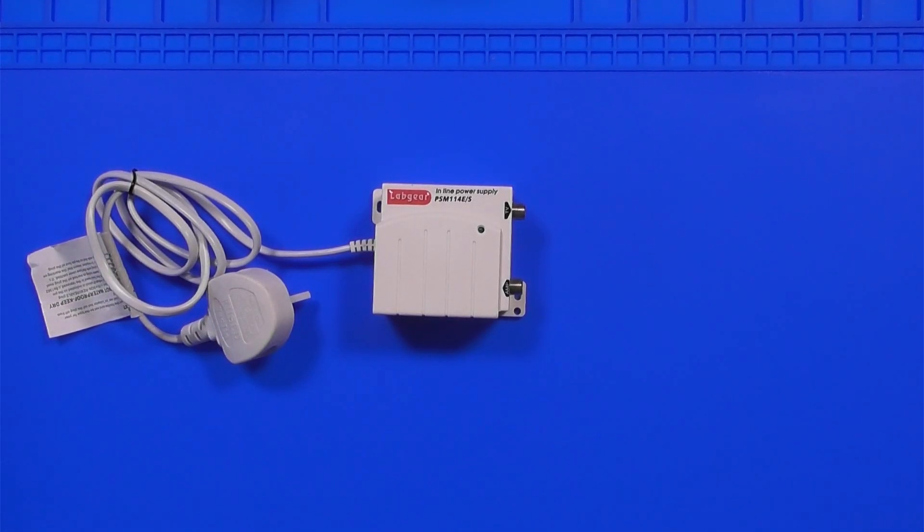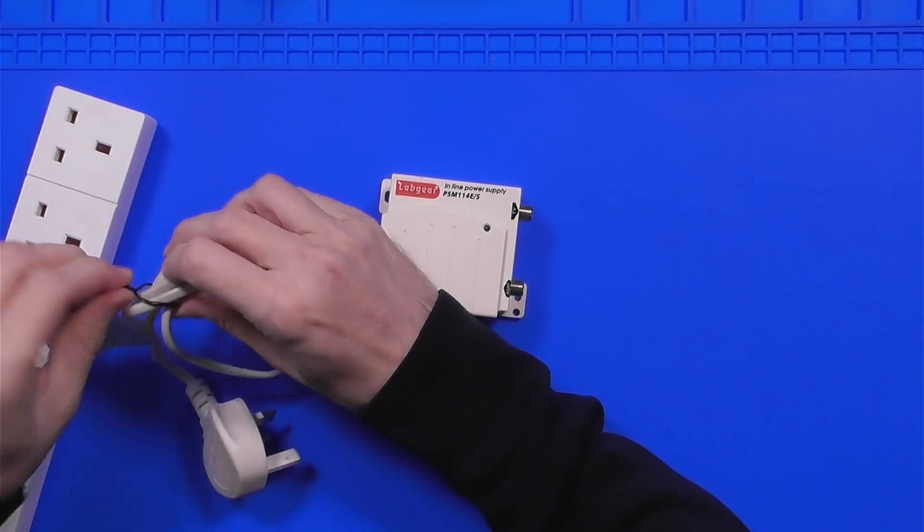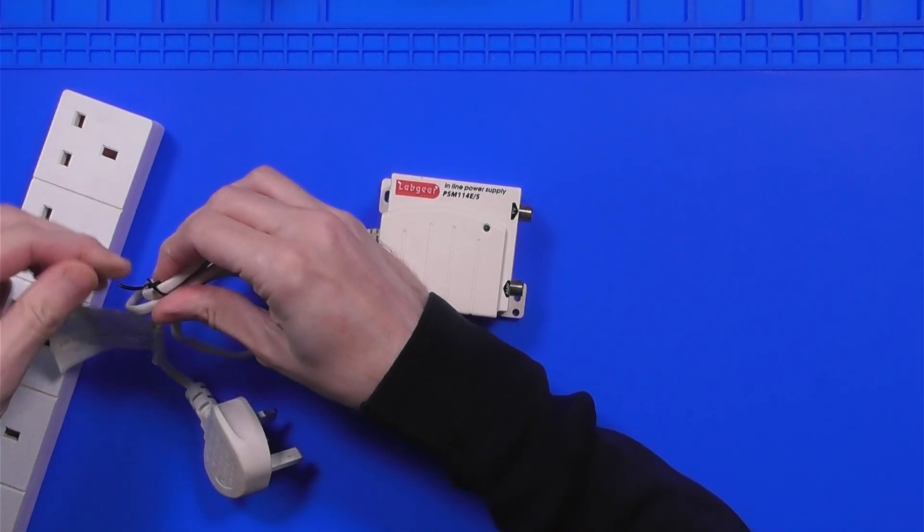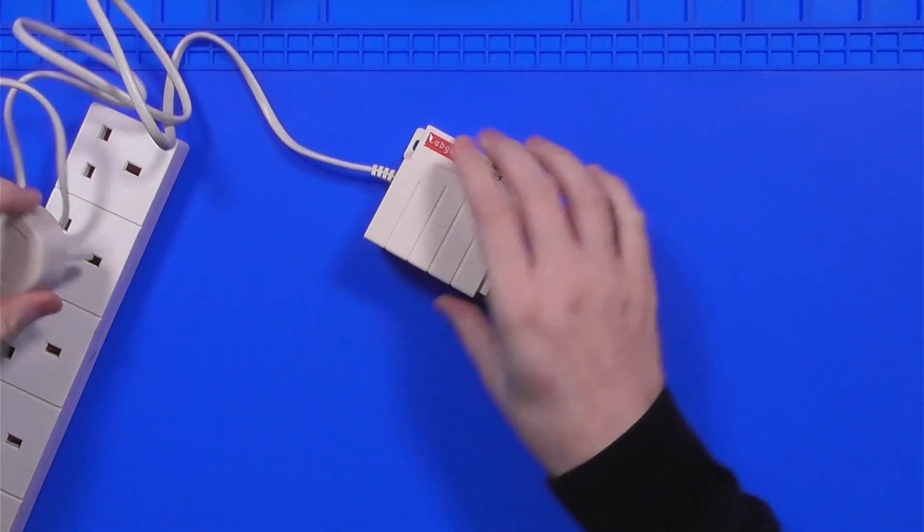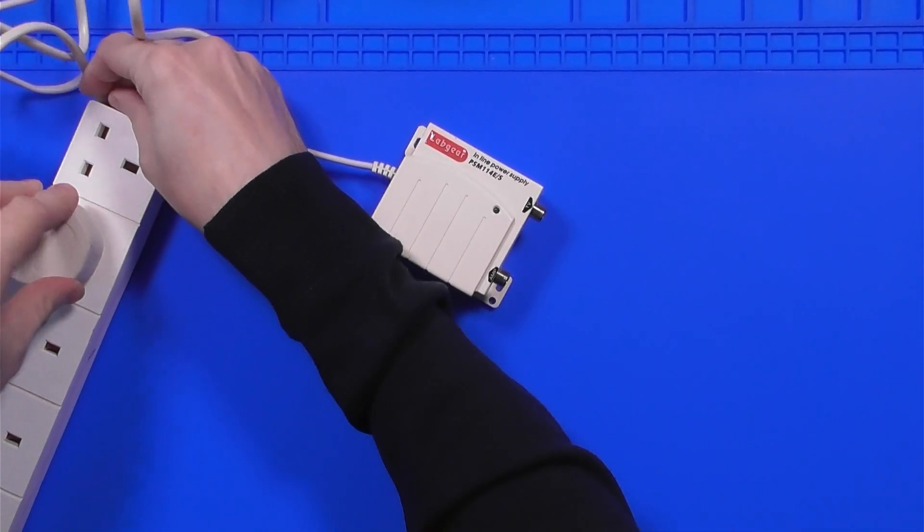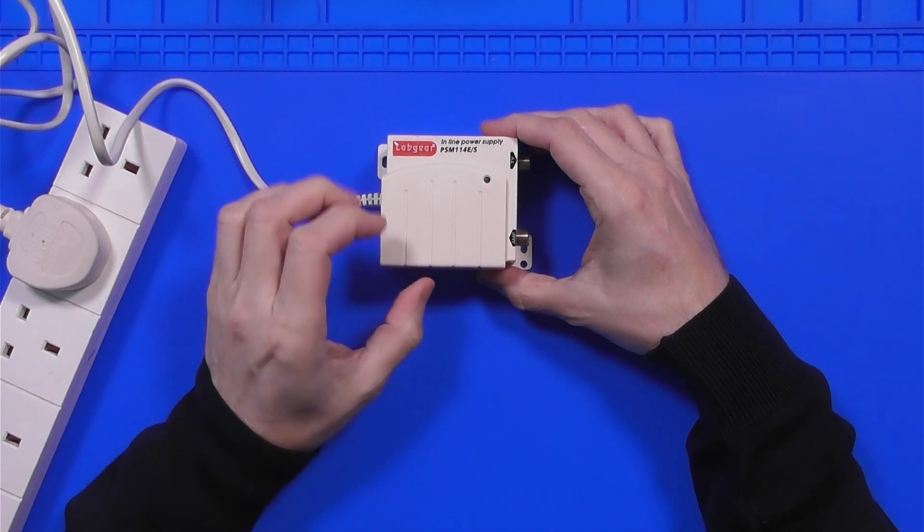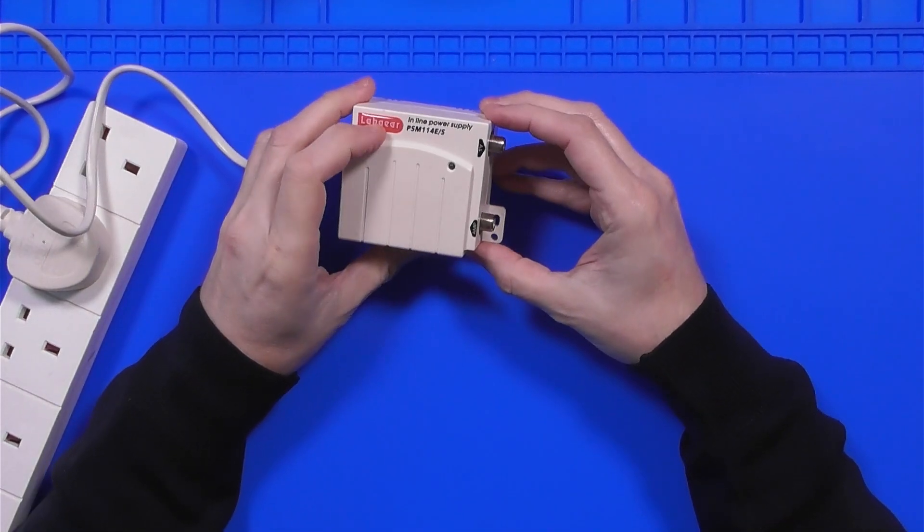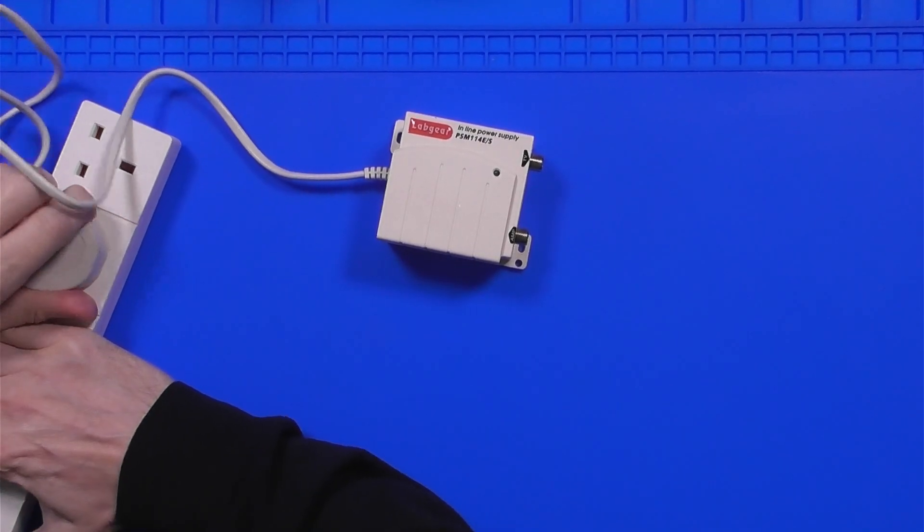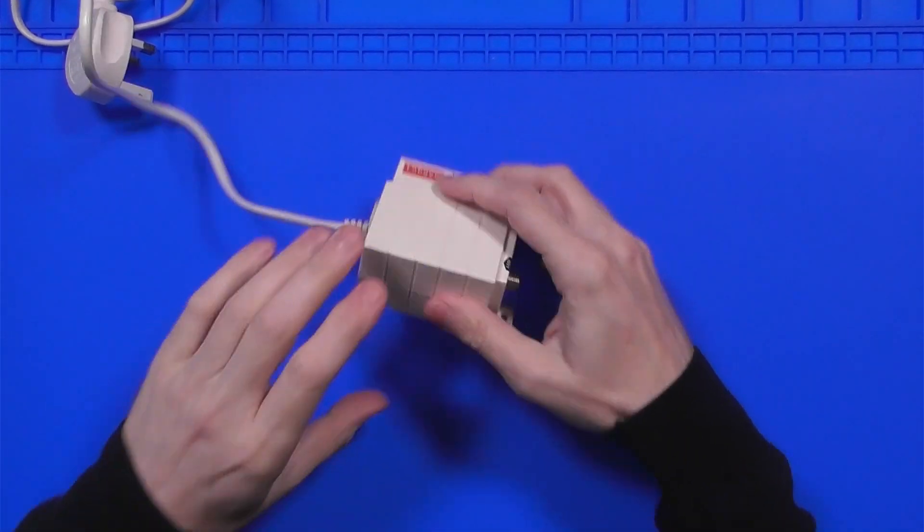Let's plug it in first just see exactly what we're dealing with. We'll take this off, plug that in, and as you can see nothing - the green light should come on so there's no activity there at all. Let's unplug it and see if we can get into it.